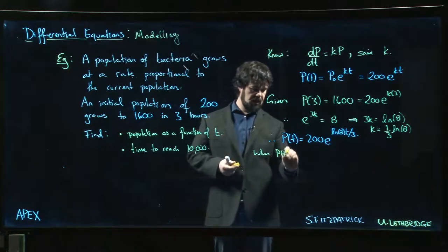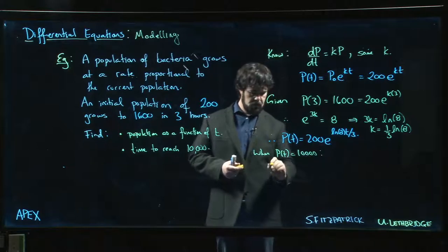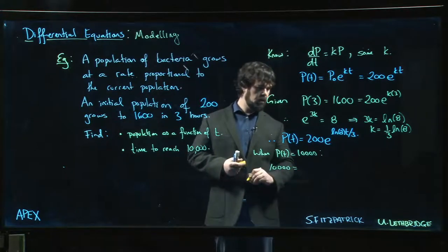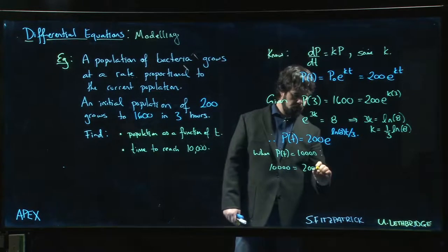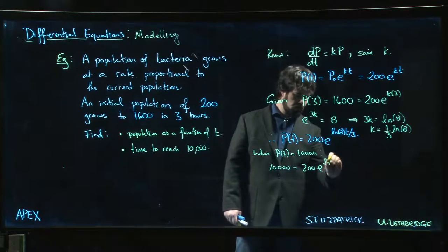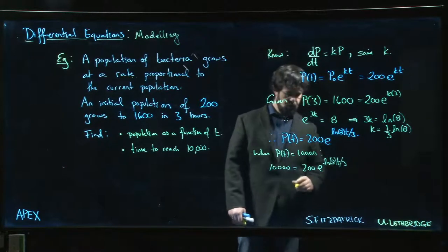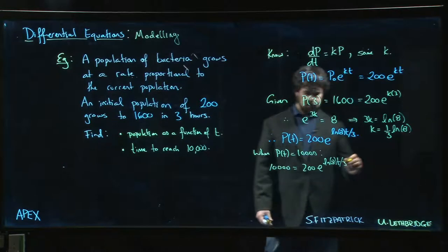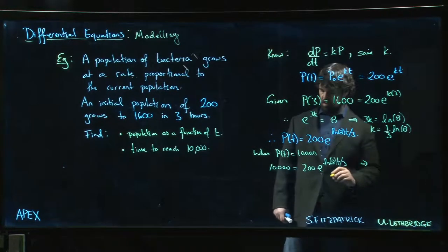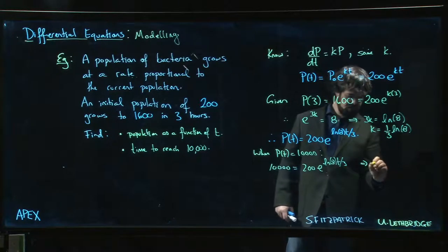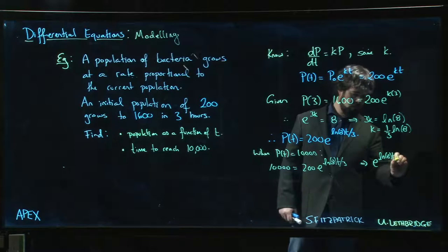When does p(t) equal 10,000? Well we'd have 10,000 equal to 200 times e to the log of 8 times t over 3. Divide both sides by 200, that's going to give me 50. So e to the log of 8 t over 3 equals 50.